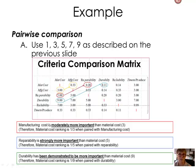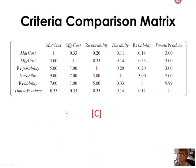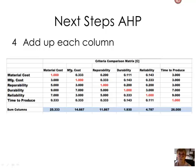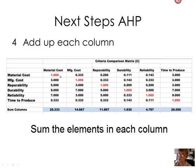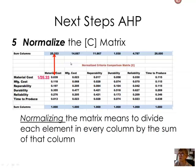I've completed the matrix — this is called the criteria comparison matrix. We've done a pairwise comparison of each one of our criteria that customers said is important. Now I'm doing some numerical work in a spreadsheet. I'm going to sum up these rankings in every column. If I sum all the numbers under the material cost column, I get 25.333. If I sum up all the numbers under manufacturing cost, I get 14.667, and so forth. All I'm doing here is summing the columns.